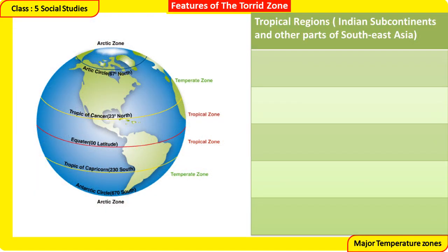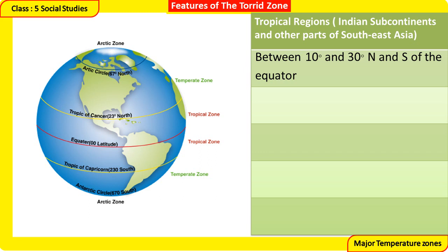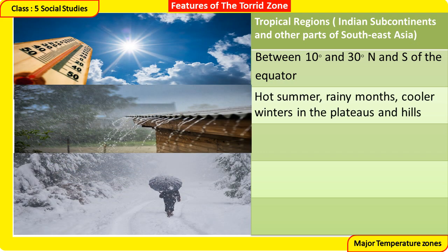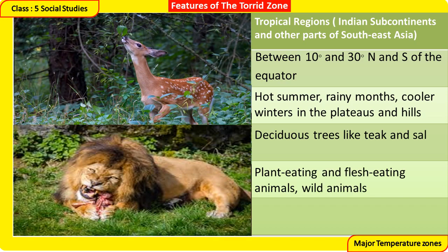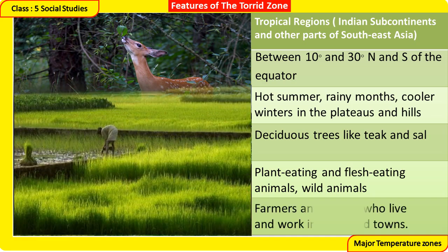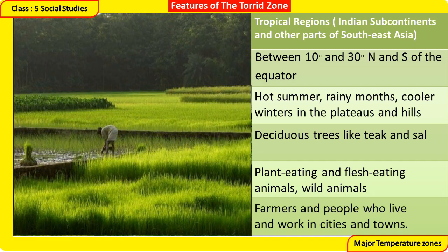Tropical Regions: found in the Indian Subcontinent and other parts of Southeast Asia, between 10 and 30 degrees north and south of the Equator. The climate features hot summers, rainy months, and cooler winters in plateaus and hills. Vegetation includes deciduous trees like teak and sal. Both plant-eating and flesh-eating wild animals are found here. The population includes farmers and people who live and work in cities and towns.